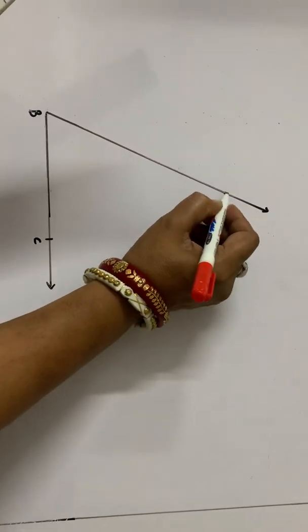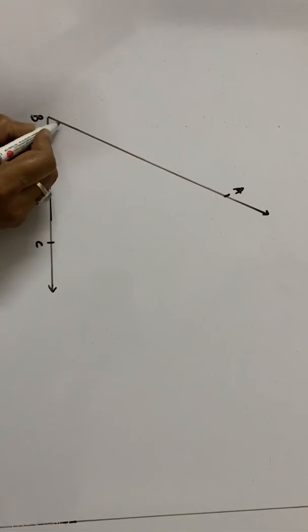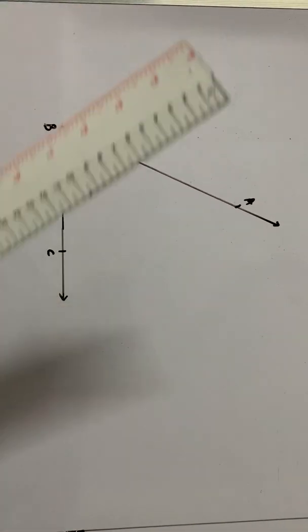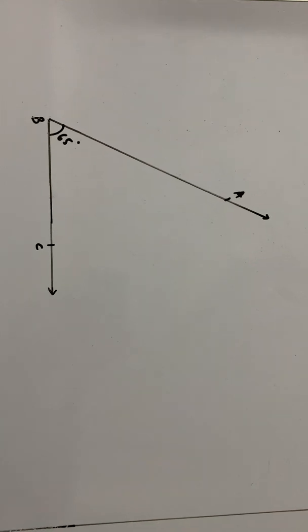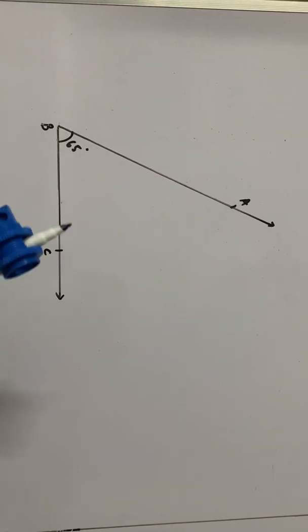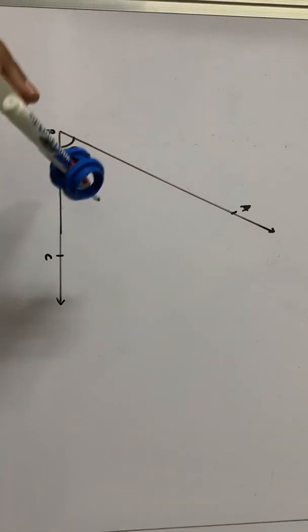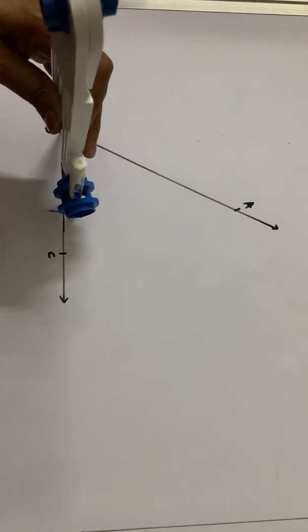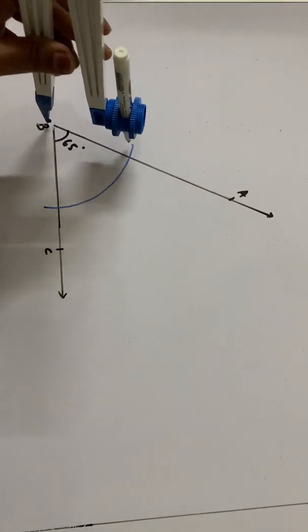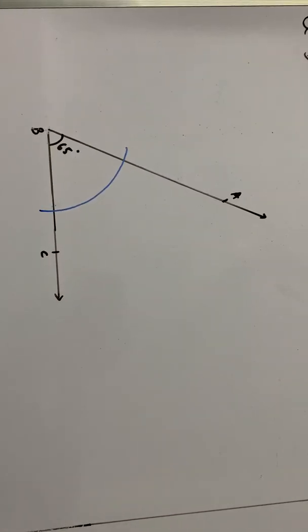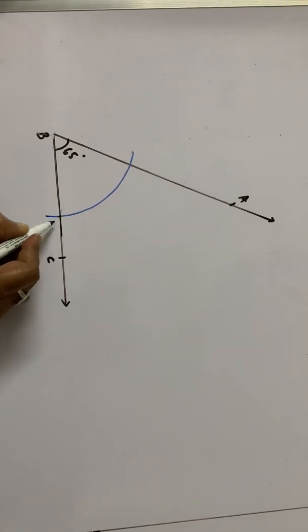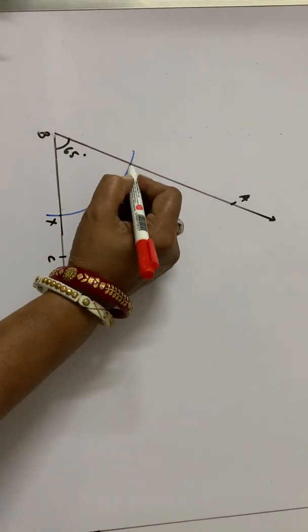...we will take a small distance in our compass. Keeping the pointer of the compass at the point B, we will draw an arc. This arc cuts the arms of the angle in points X and Y.